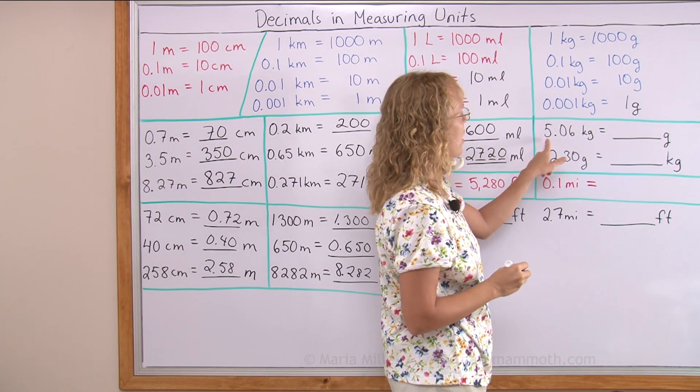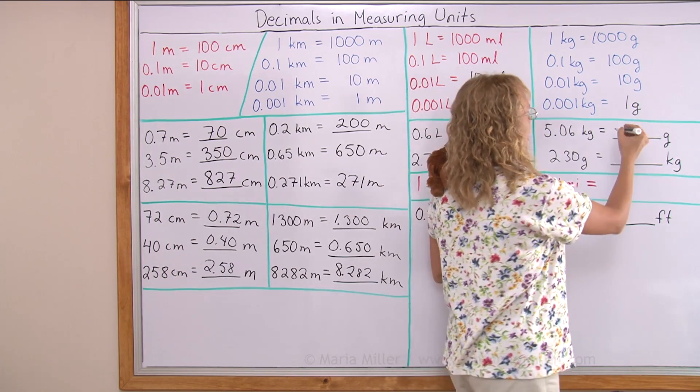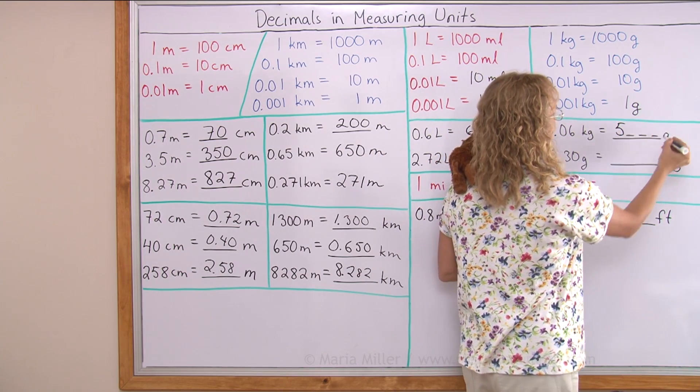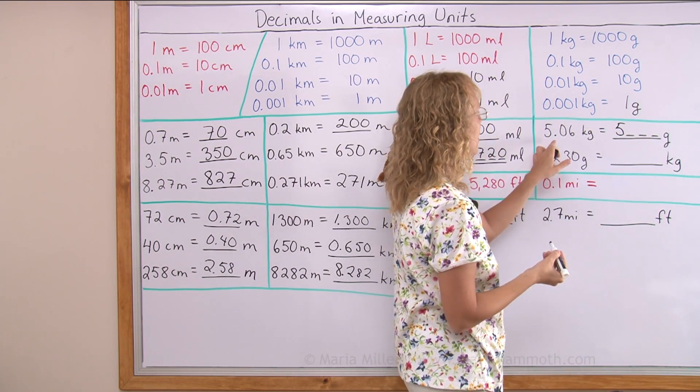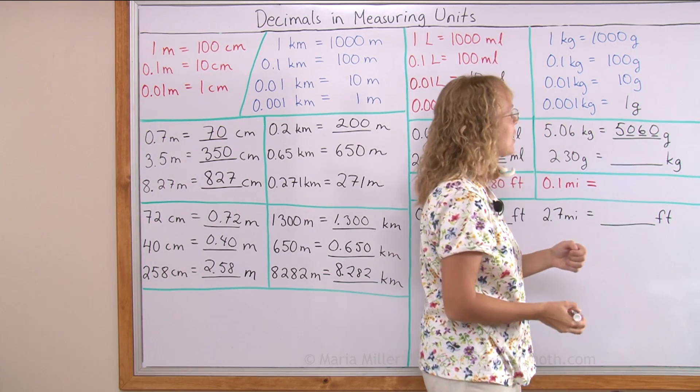Here also 5.06 kilograms. Since 5 kilograms is exactly 5,000, you have to have something like this: 5,000 grams. And so this zero and six just follow over here. And then you have to put one more zero there to fill it in.